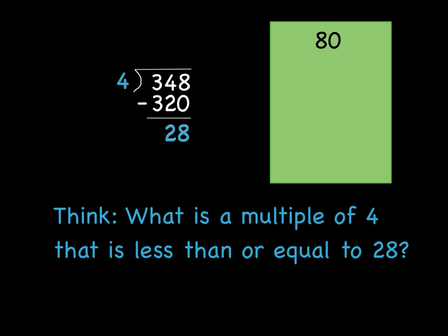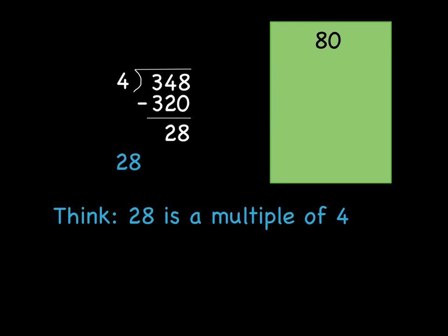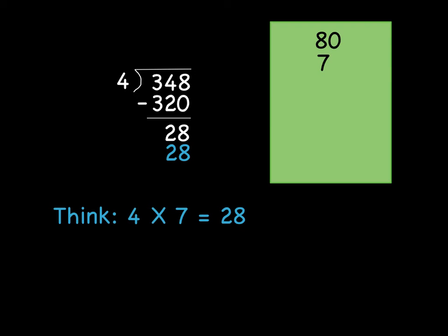And now we're going to think, what is a multiple of 4 that is less than or equal to 28? So same thing. How many times can 4 go into 28? Well, we know that 28 is a multiple of 4. So we're going to use that one. Write it down underneath our 28 and think 4 times what equals 28? 4 times 7 equals 28. So in our answer box, we're going to write a 7 here.